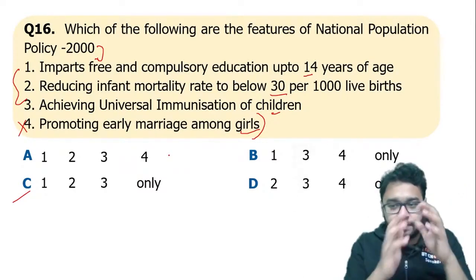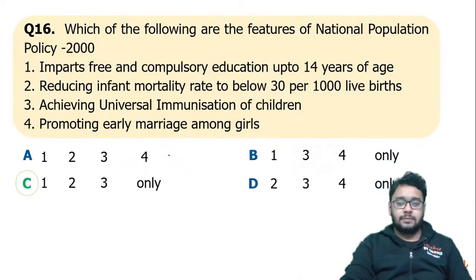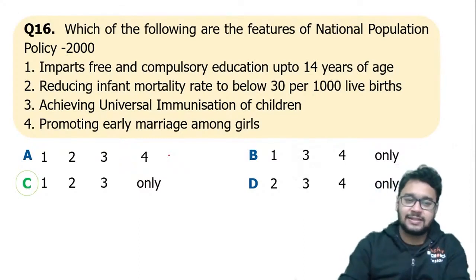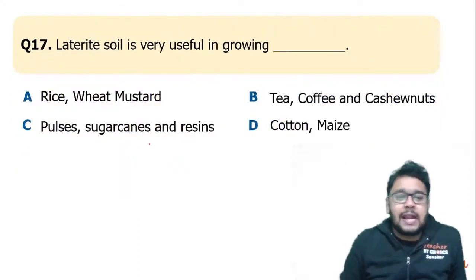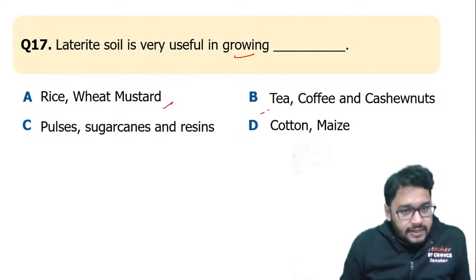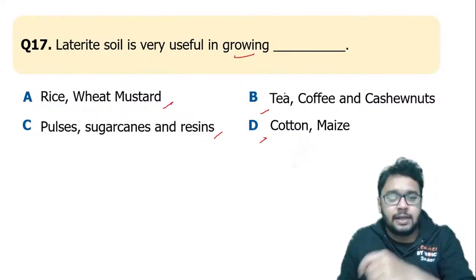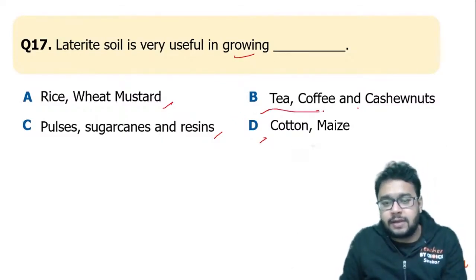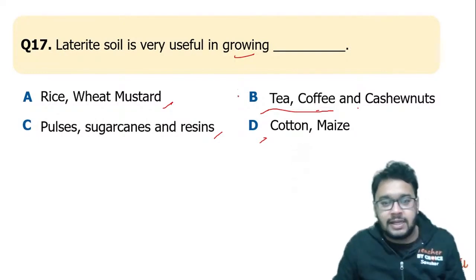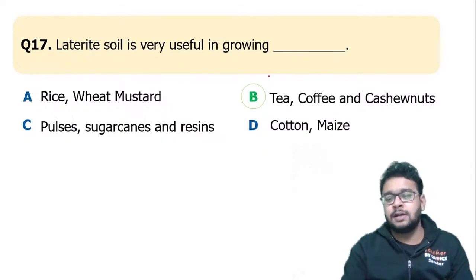Simple Chandigarh paper — simple NCERT. Laterite soil is useful for growing tea, coffee, and cashew nut. I had given this exact same question in the last NTSE prep test. The correct answer is B — tea, coffee, and cashew nut.